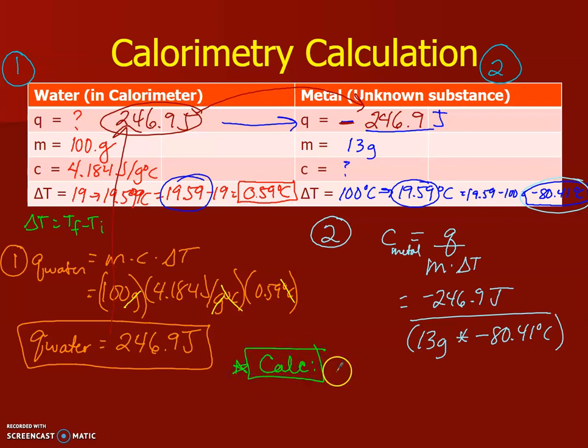You can enter it in the calculator two ways. You can either do negative 246.9 divided by, and then put parentheses, 13 times negative 80.41, or negative 246.9 divided by 13 divided by negative 80.41.